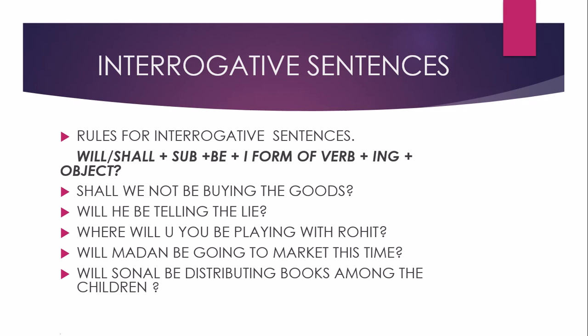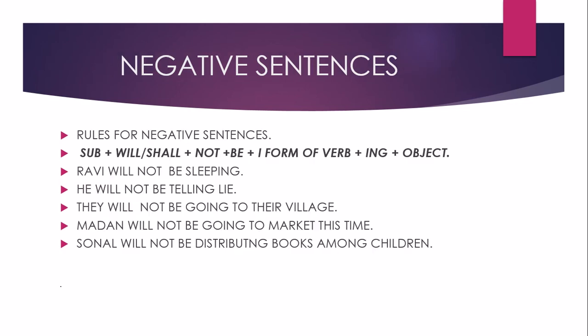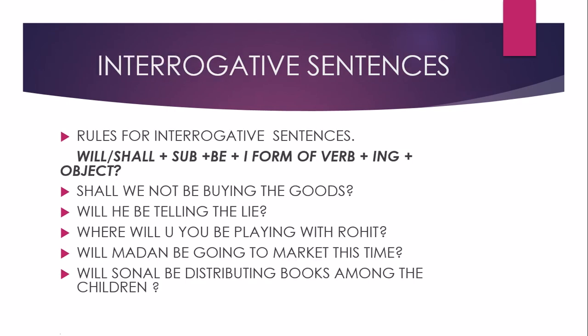Next sentence: Will Madden be going to market this time — क्या Madden इस time market जा रहा होगा? Negative में हम बोलते हैं: Madden will not be going to market this time। उसी तरह से interrogative में helping verb starting में आ जाती है। Interrogative negative: Will Madden not be going to market this time — क्या Madden इस time market नहीं जा रहा होगा? Will Sonal be distributing books among the children — क्या Sonal बच्चों के बीच books distribute कर रही होगी?